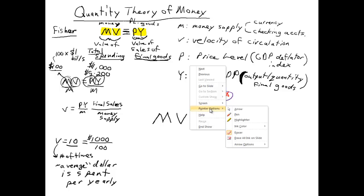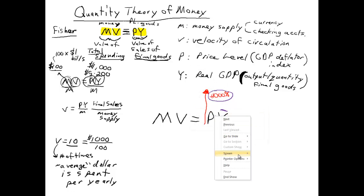You might sense where I'm going with this, but let's play along. Let's think about V. Let me use green for this. Let's think about V. What would have to be happening with V to explain the inflation? Well, V would have to be going up proportionally.